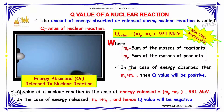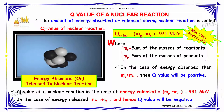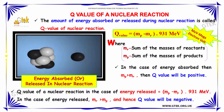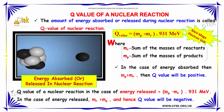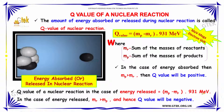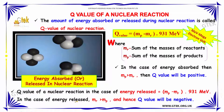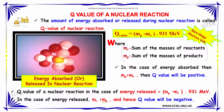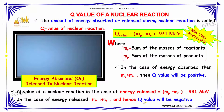In the case of energy absorbed, MP should be greater than MR so that the Q-value is positive. The Q-value of a nuclear reaction in the case of energy released is equal to MP minus MR into 931 mega electron volt. In the case of energy released, MR is greater than MP and hence Q-value will be negative.